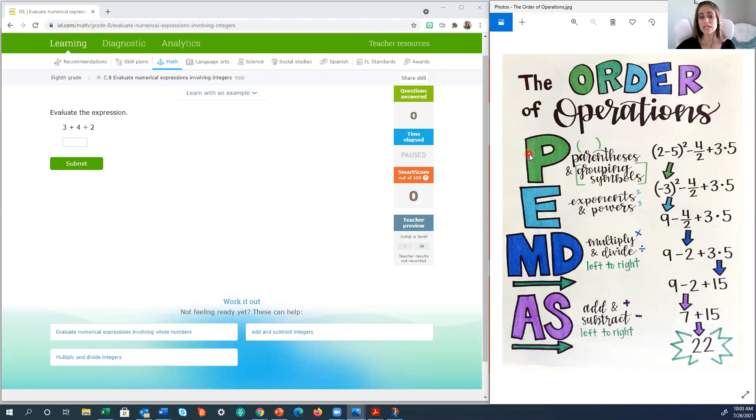So P stands for parentheses, which really means a grouping symbol. So it could actually be parentheses, it could be brackets, it could be a fraction bar, anything that is a grouping symbol always needs to be done first. Second is your exponents or your powers. So exponents, if you look right here, we have a nice little diagram, that's when you have the small superscript up top. A lot of times you square something and eventually later on in the year you'll get to cubing as well, which is when you have it to the power of 3.